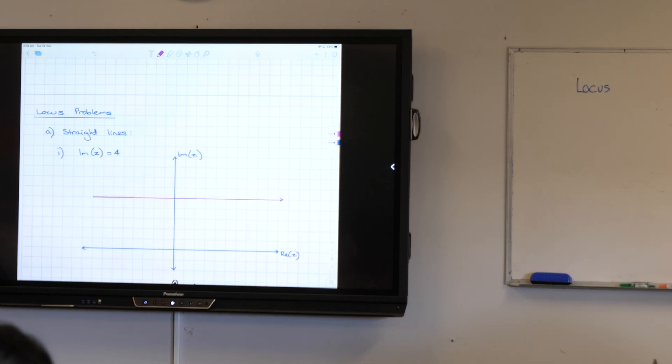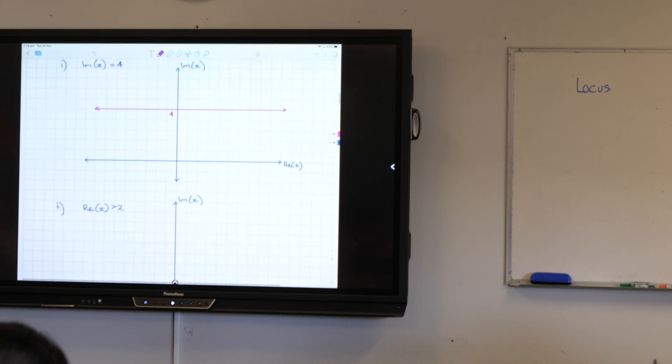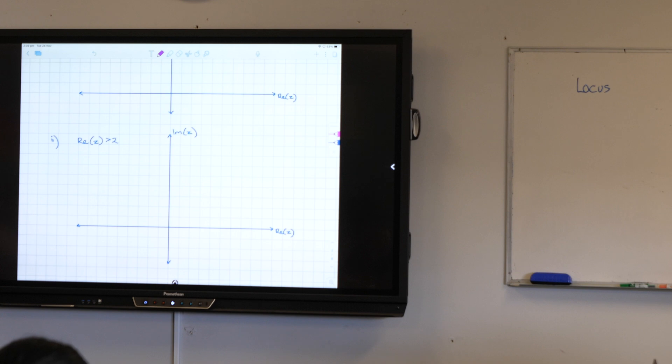It's not four i, it's four. Just to reiterate, do I include the points on the line? On the line. Yeah, come on, of course you do. We happy with that one? Have we drawn up a picture? We're going to get more complicated. Let's ramp up. If I have that real z is greater than two, what is this going to look like?